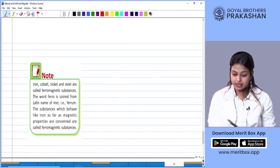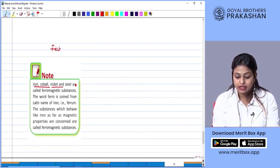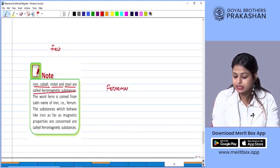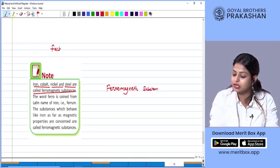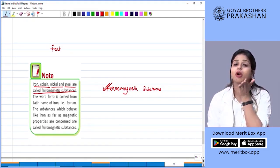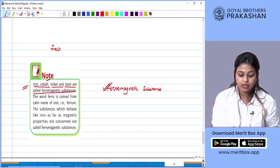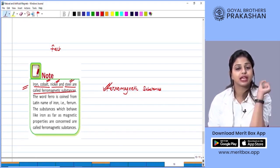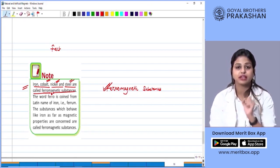Now there is one more fact here. The fact says iron, cobalt, nickel and steel are called ferromagnetic substances. Now when you will grow up and go to higher classes and study science, you will learn about various types of magnetic substances. They vary on their properties. So when we make magnets out of iron, cobalt, nickel and steel, those kinds of artificial magnets form what kind of magnets? Ferromagnetic substances.